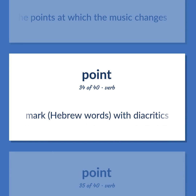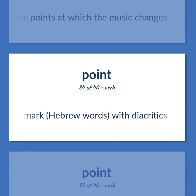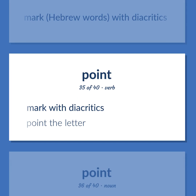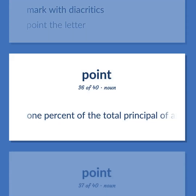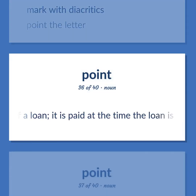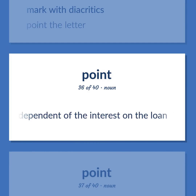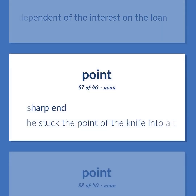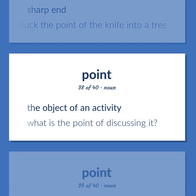Mark Hebrew words with diacritics. Mark with diacritics. Point the letter. 1% of the total principal of a loan; it is paid at the time the loan is made and is independent of the interest on the loan. Sharp end. He stuck the point of the knife into a tree. The object of an activity. What is the point of discussing it?